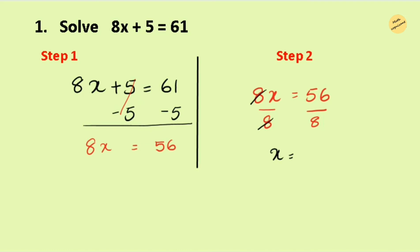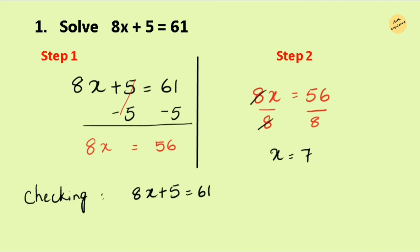Therefore, the value of variable X in this equation is 7. Let's verify whether the answer is true or false. Write the equation as it is: 8x plus 5 equals 61. Substitute X equals 7, so we write 8 times 7 plus 5 equals 61. Following the order of operations, we multiply first — please watch my video on that topic — so 8 times 7 equals 56.